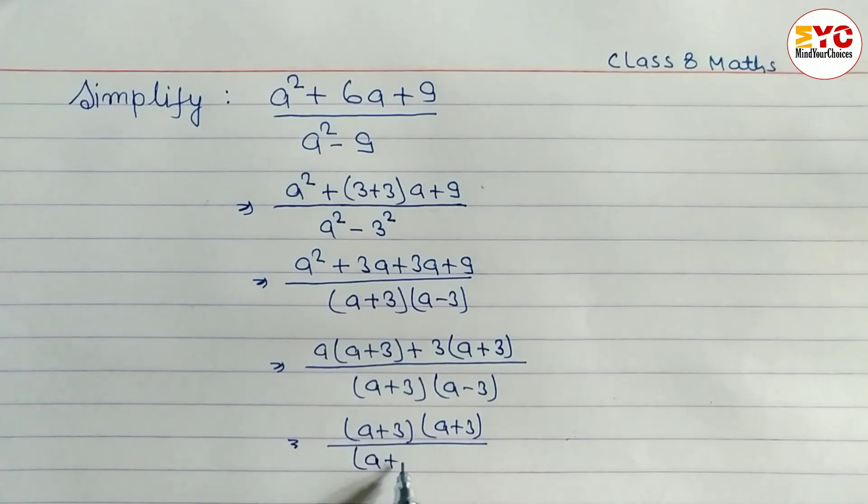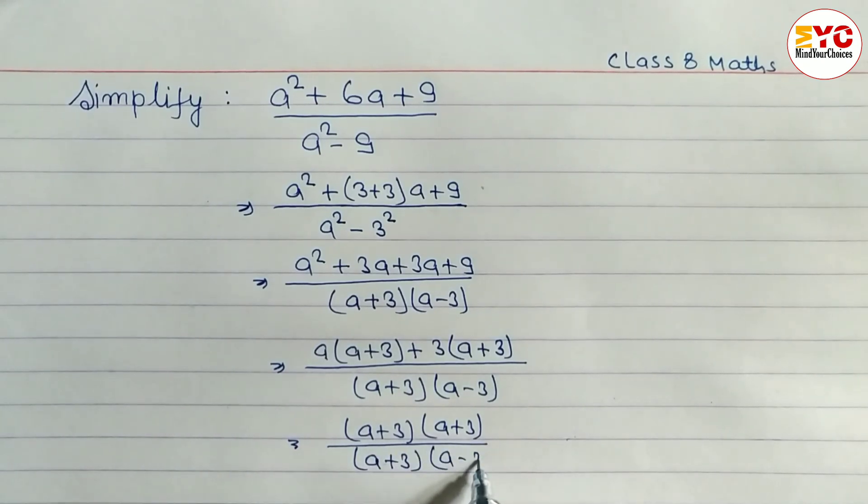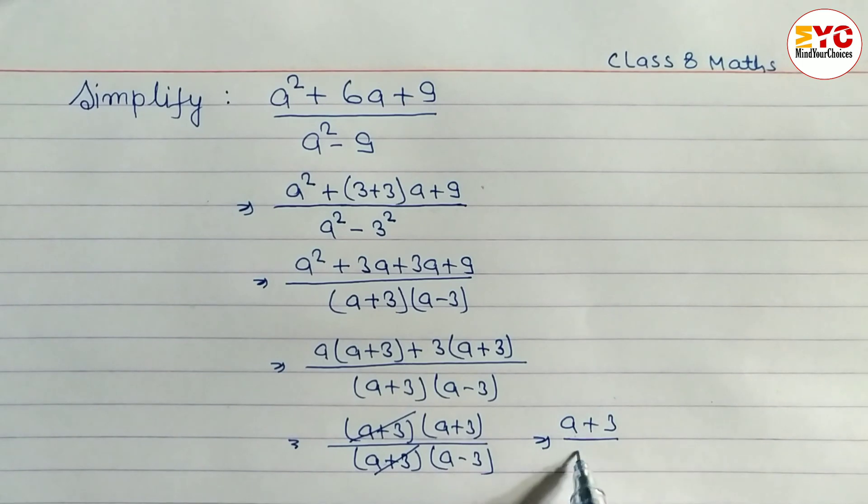You can see here a plus 3, a plus 3, so we can cancel. What is remaining here? a plus 3 by a minus 3 is the answer. Hope you understand this video.